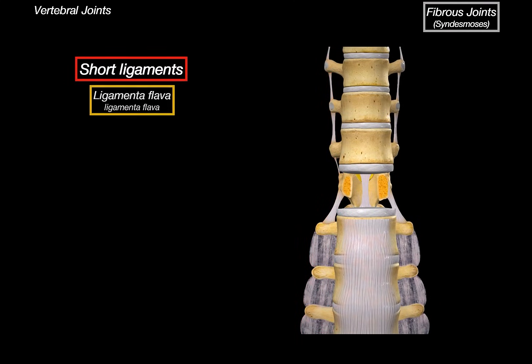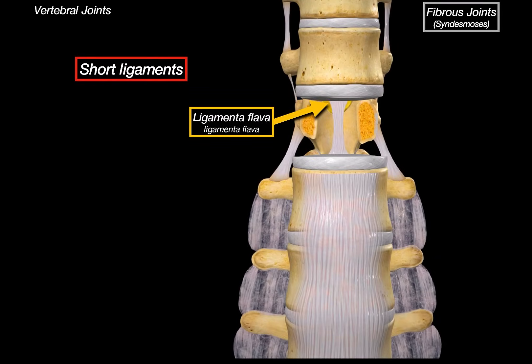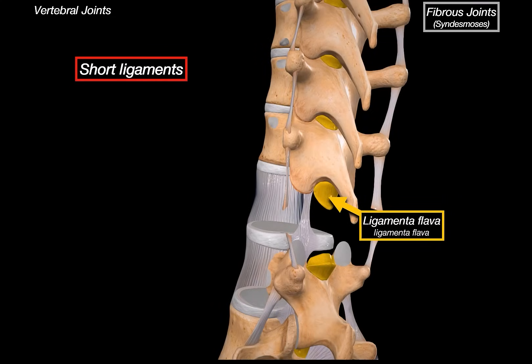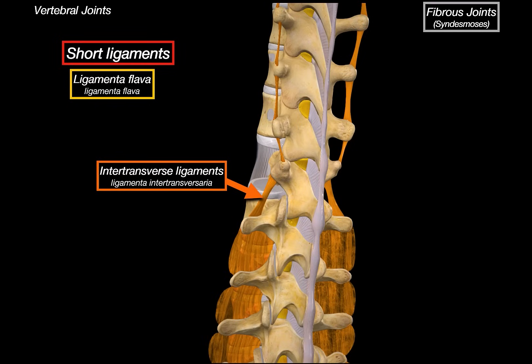The first short ligament is the ligamentum flavum. These are elastic ligaments that connect the laminae of adjacent vertebrae, and they are special because they contain a lot of elastic fibers, giving them a yellow color. Their main job is to maintain posture and assist with recoil of the spine after flexion — like a built-in spring system. The inter-transverse ligaments run between the transverse processes and limit lateral flexion, keeping the spine stable when we bend to the side.